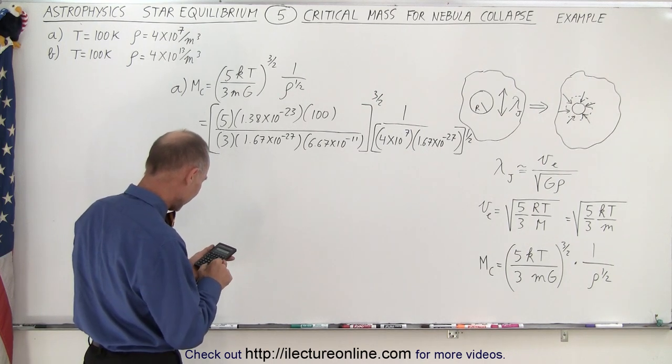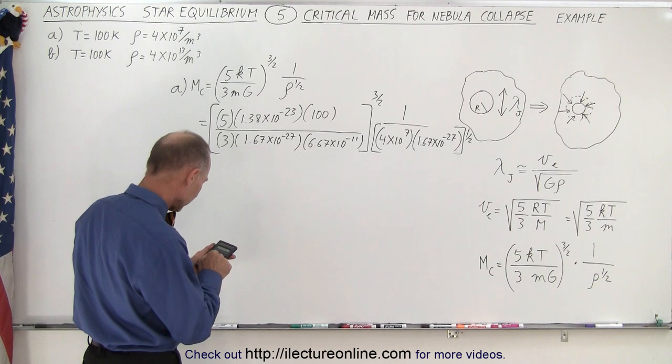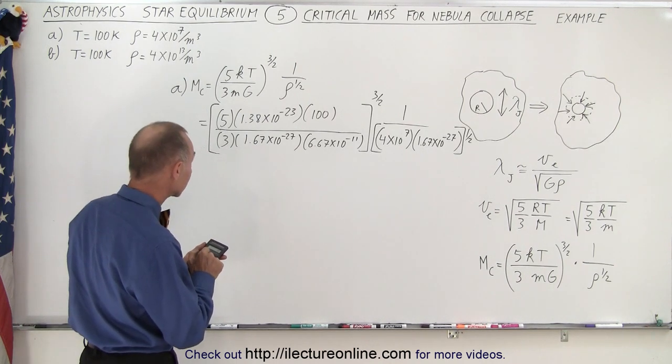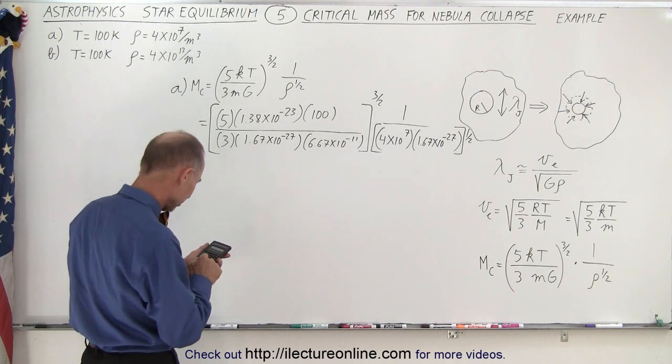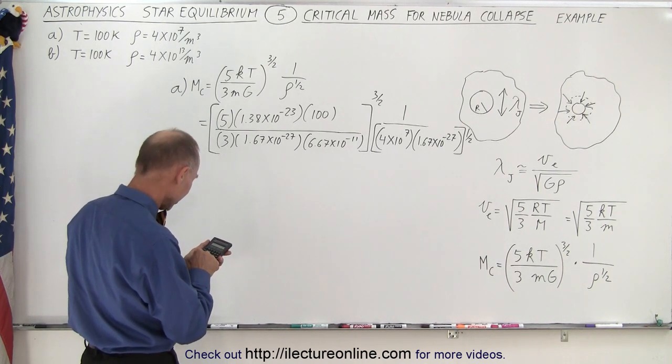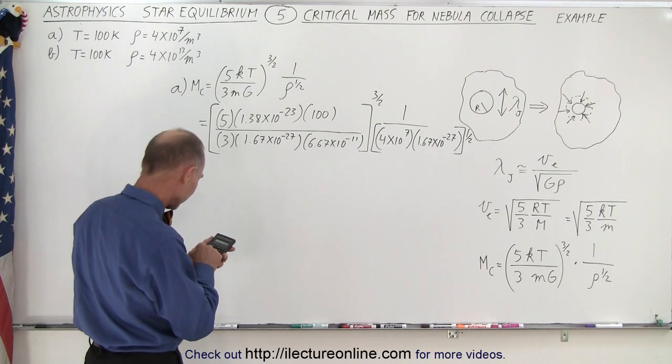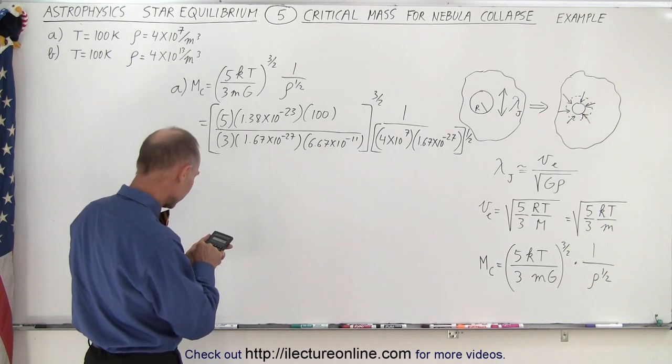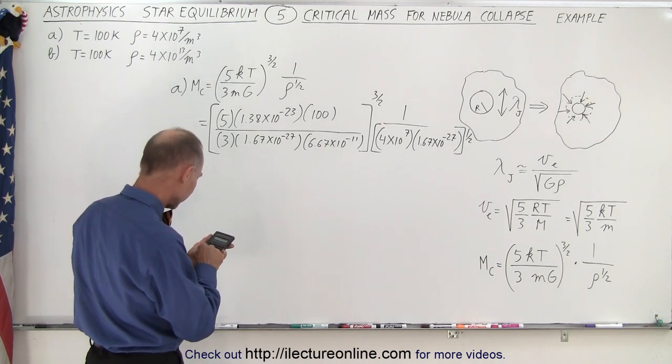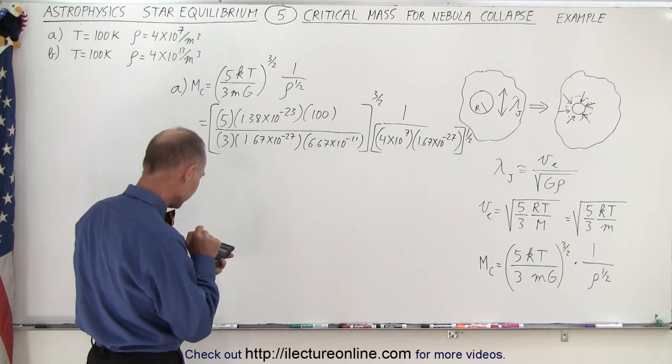Now we're going to raise that to the 3 halves power. So 1.5 there. Oops. Okay, strike that. Do that again. Push the wrong button. 5 times 1.38 e to the minus 23 times 100 divided by 3 divided by 1.67 e to the minus 27 divided by 6.67 e to the minus 11 equals. Now we raise that to the 1.5 power.